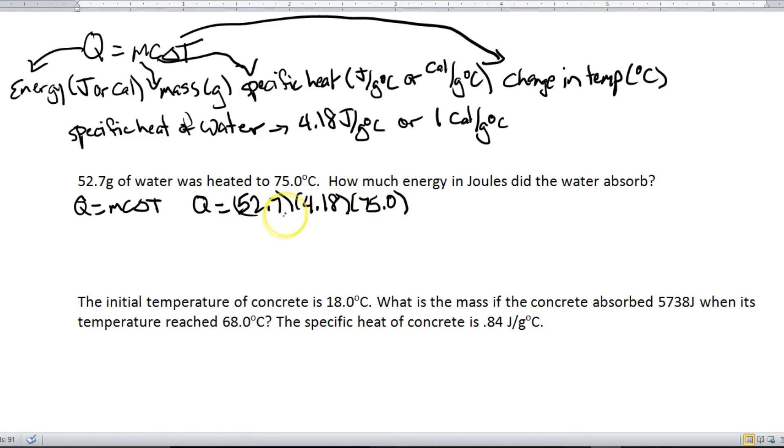Alright, so all you've got to do is take your calculator, multiply straight across, and what you get is 16,521.45, but if you look back at all of the original numbers here, they all have three significant figures. So we're going to count 1, 2, 3, stop at 5, and the next number is a 2, which means we round down. So we're going to round this to 16,500, and then this being energy, the units are joules.